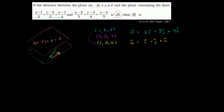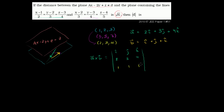Taking the cross product of a and b will give us a normal vector to the blue plane. So a cross b equals the determinant with ijk in the first row, (2, 3, 4) in the second row, and (1, 1, 1) in the third row.